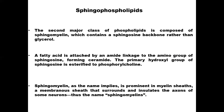In sphingophospholipids, the fatty acid is attached by an amide linkage to the amino group of sphingosine, forming a structure called ceramide. The primary hydroxyl group of sphingosine is esterified to form the phosphorylcholine group. Choline is attached to the phosphoric acid residue at carbon three.